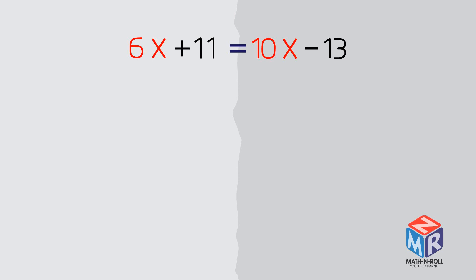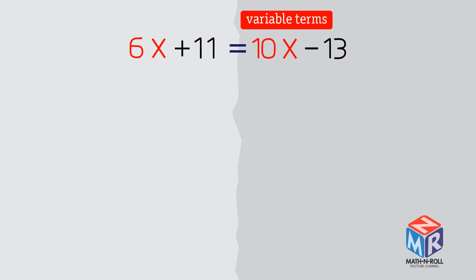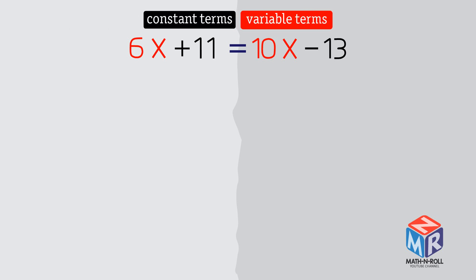Let's try another example: 6x plus 11 equals 10x minus 13. We have variables on both sides. We need to pick the side for variables. 10x has a larger coefficient than 6x, so we choose the right side for variable terms. The left side is left for constant terms.